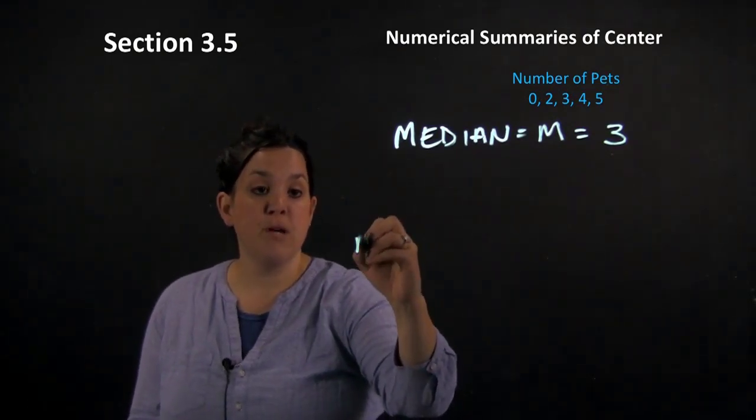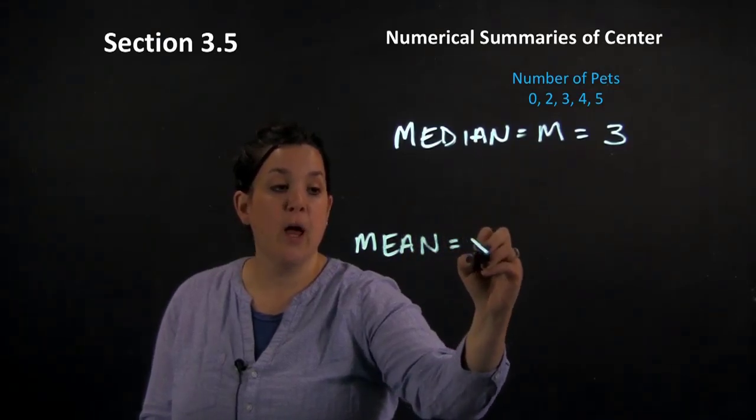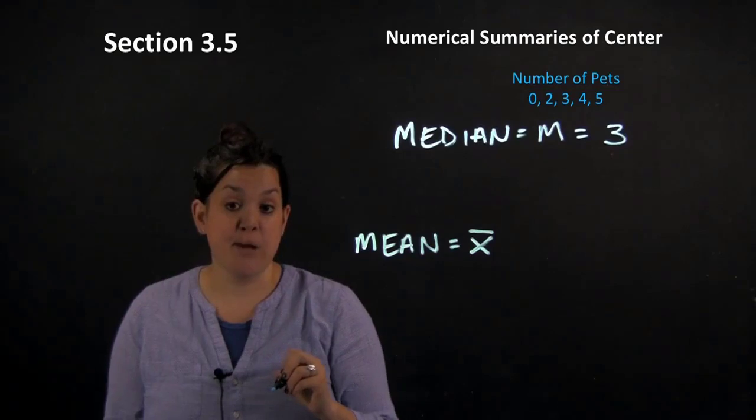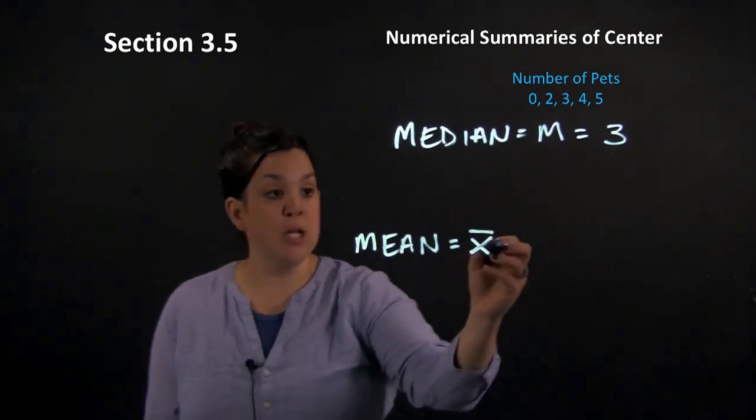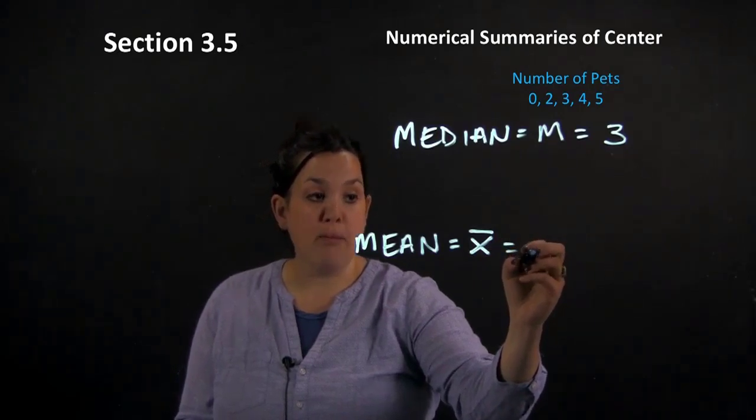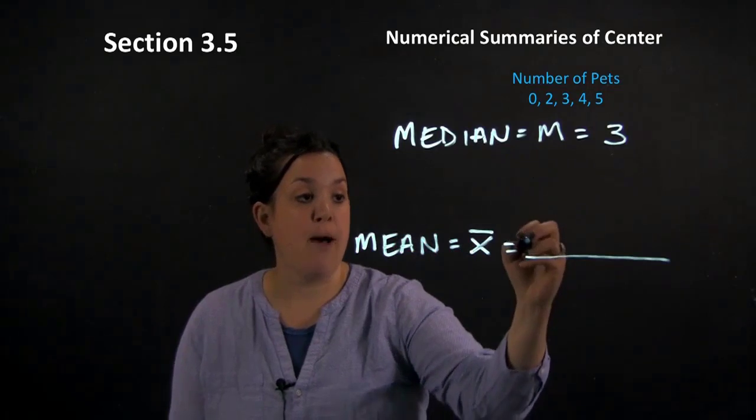The next measure of center that we have is going to be the mean. So the mean is the arithmetic average of a data set. We use X-bar to represent the sample mean, so it's the notation or the symbol used to represent the sample mean. Now, you've all probably calculated an average before, so the mean is the statistical way of describing average.